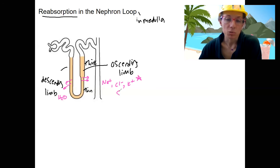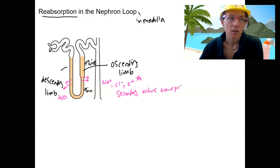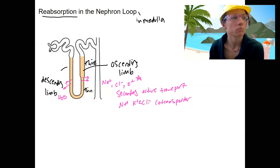These are going to be through secondary active transport and a special protein called the sodium-potassium-chloride cotransporter, two chloride actually, it's got two of them. So we'll look at this.